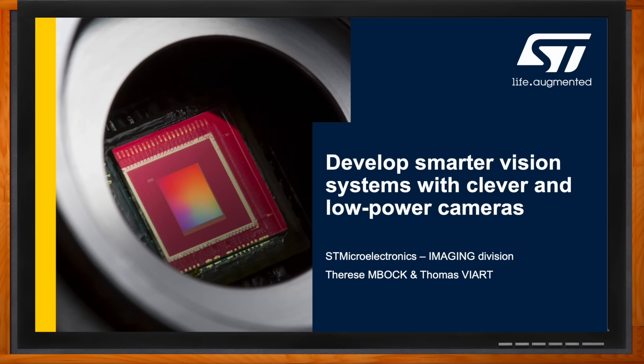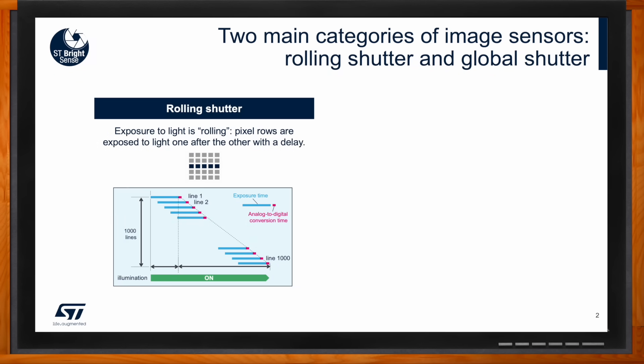In the world of cameras we have always heard about rolling shutter, but your cameras use global shutter technology. So Thomas, explain the difference between rolling shutter and global shutter. There are two main technologies used for cameras. The first and the major one is called the rolling shutter. This technology is everywhere — when you take a picture of a landscape with your phone, it will use a rolling shutter.